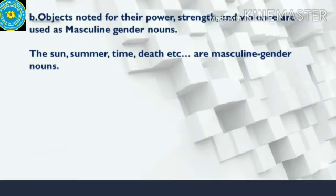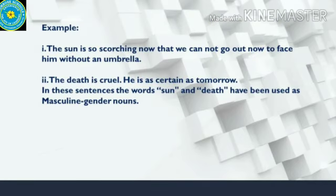In the next slide, you will find certain nouns that come under masculine gender. Objects like the sun, summer, time and death represent the masculine gender because they show something powerful, strong or violent. The sun is so scorching that we cannot go out to face him — you should say 'face him' because it comes under masculine gender. Death is very cruel and you can say 'he is as certain as tomorrow.' In these sentences, the words sun and death have been used as masculine gender.